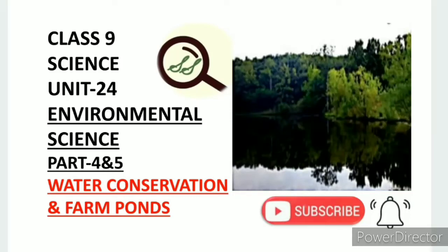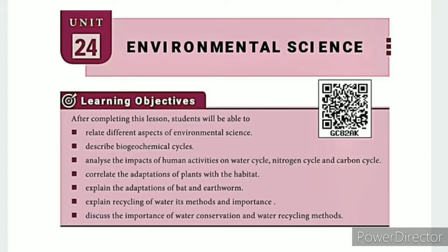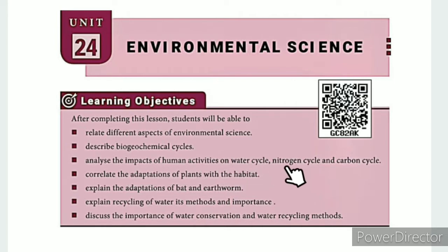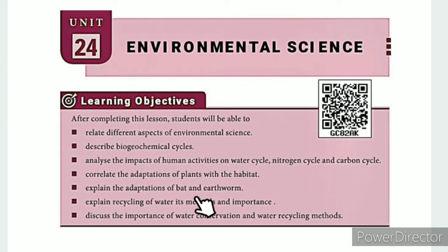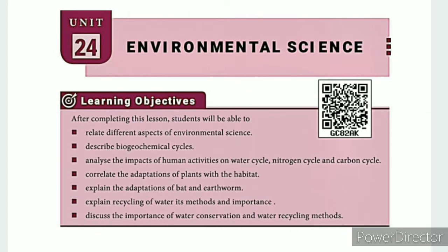Greetings from SS Class 9 Science, Unit 24, Environmental Science Part 4: Water Conservation, Part 5: Farm Ponds. The learning objectives are to relate different aspects of environmental science, describe bio-geochemical cycles, analyse the impacts of human activities on water cycle, nitrogen cycle and carbon cycle, correlate the adaptations of plants with the habitat, explain the adaptations of bat and earthworm, explain recycling of water, its methods and importance, and discuss the importance of water conservation and water recycling methods.